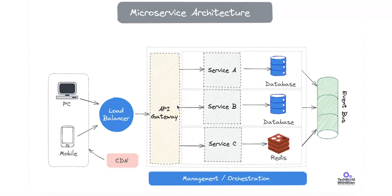The API gateway is a reverse proxy, meaning it routes incoming API requests from the client to the appropriate downstream microservice. It shields the internal microservice complexity from the client and centralizes several cross-cutting concerns. Core features include rate limiting, which controls the number of requests a client can make in a given period, and authentication and authorization — the API gateway is often integrated with OAuth 2.0 or JWT tokens to authenticate and authorize client requests before forwarding them to microservices.